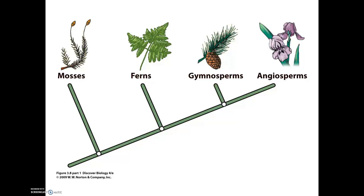The way this graph will work is that I'll draw an arrow where a particular adaptation was developed. Everything above that arrow will be considered to have that adaptation, whereas everything below that arrow will not. The first adaptation to add is vascular tissue. Vascular tissue is a series of tubes or pipes within the plants used for water transport. Mosses do not have this, and so mosses are often very short and they need to live in very moist environments. Ferns, gymnosperms, and angiosperms do have vascular tissue and so they can grow to a much larger size.